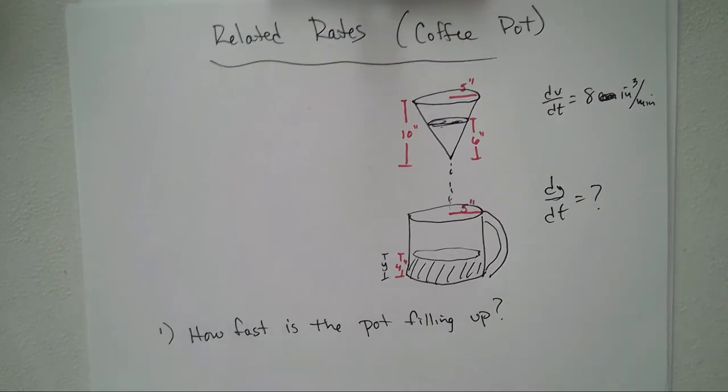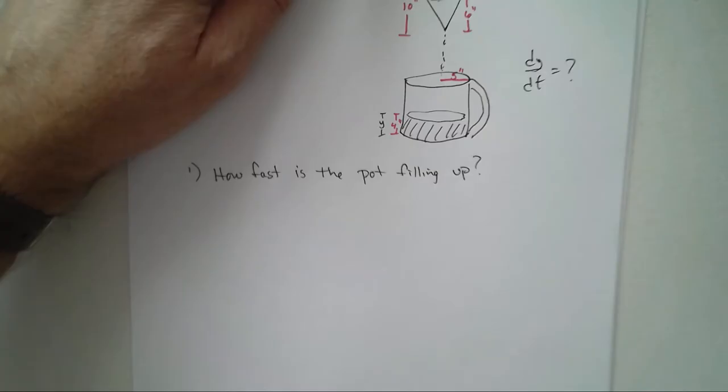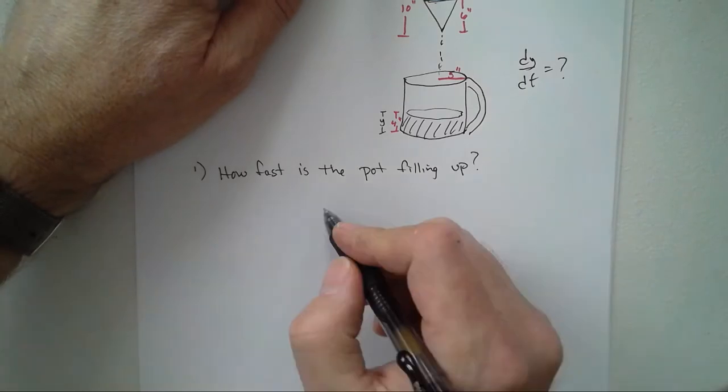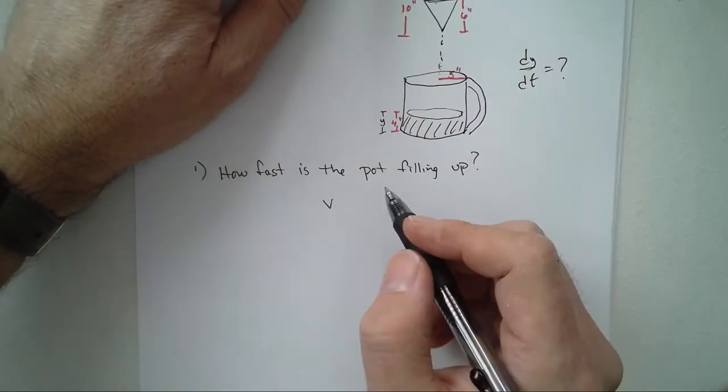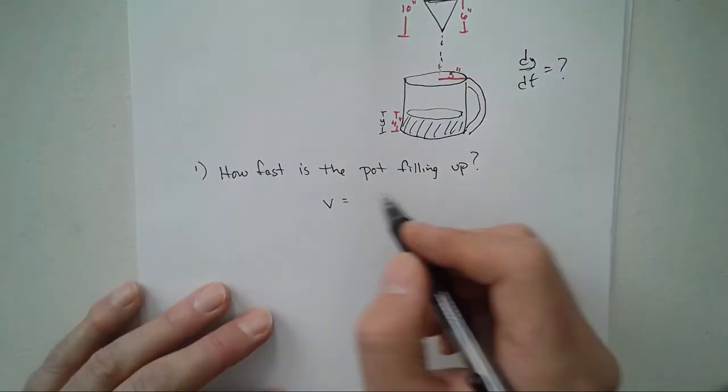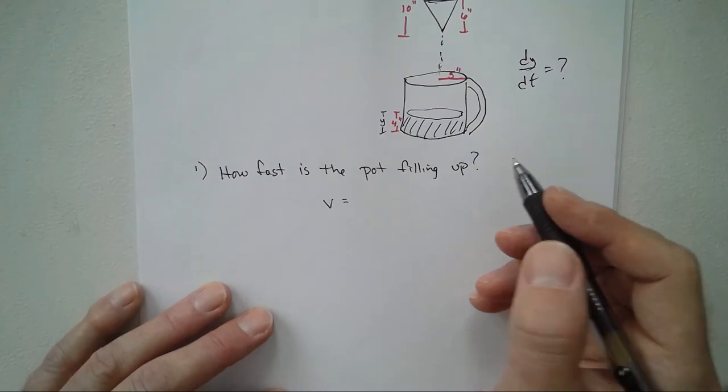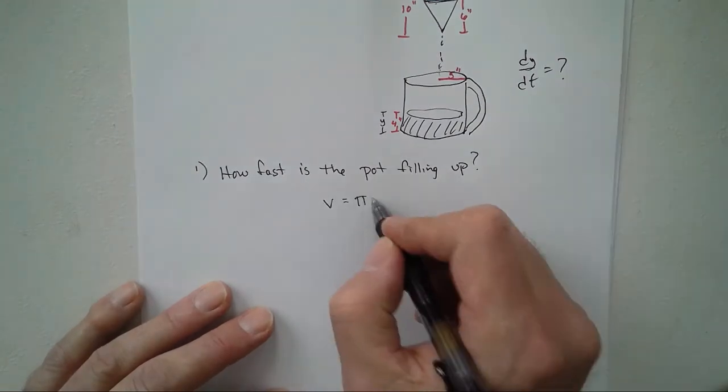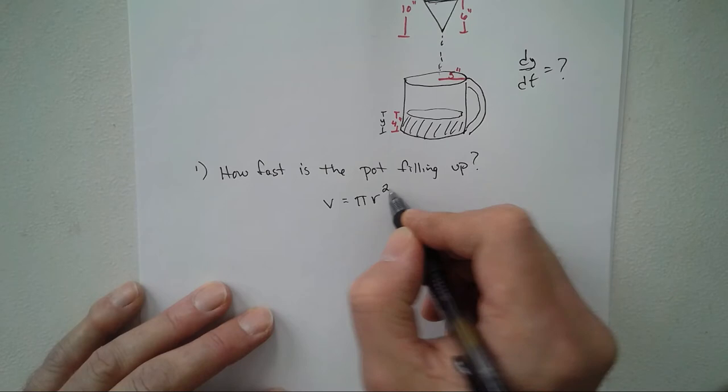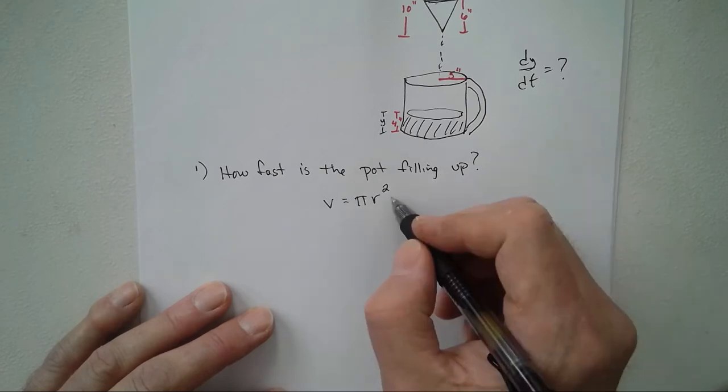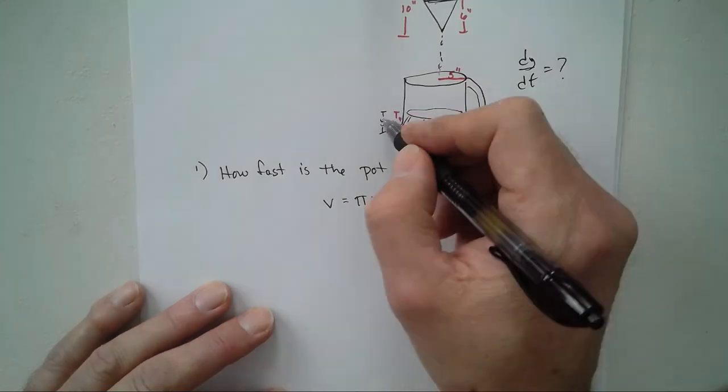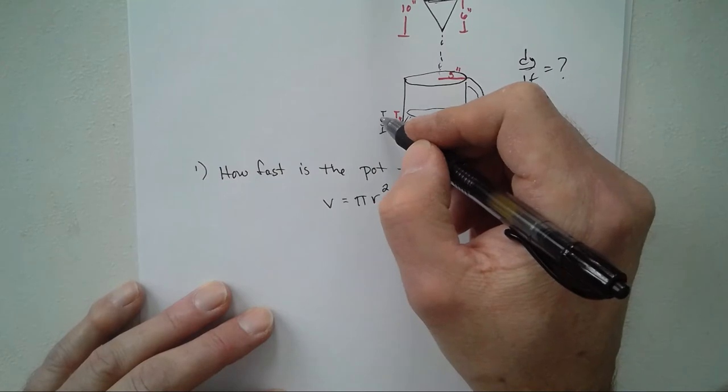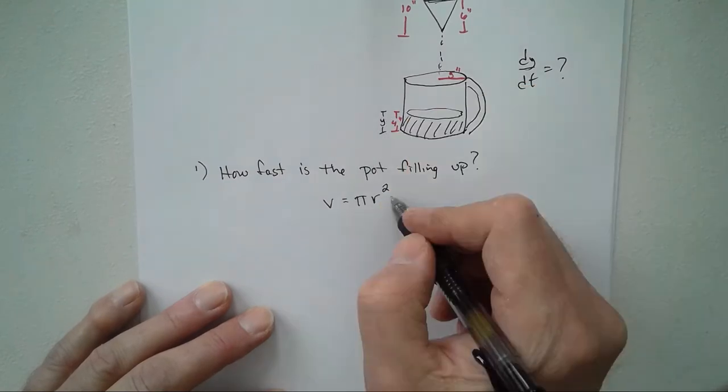How fast is the pot filling up? Volume equals πr² times the height. Well, we call our height y. I can call it h, I guess I'll leave it as y, it doesn't matter. πr² times height.